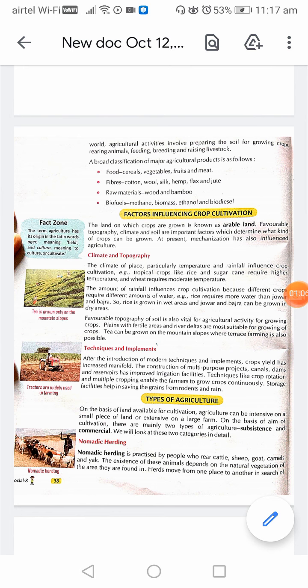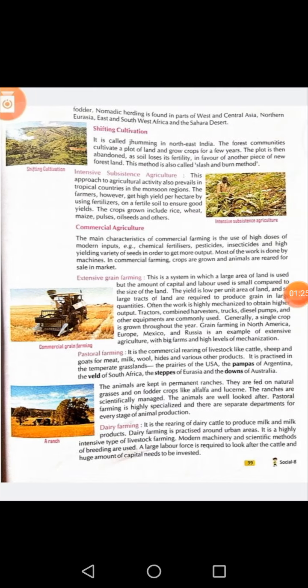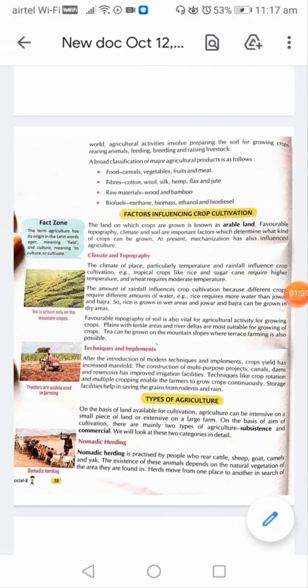First type: nomadic herding. Nomadic herding is practiced by people who rear cattle, sheep, goat, camels and yak. The existence of these animals depends on the natural vegetation of the area they are found in. Herds move from one place to another in search of fodder. Nomadic herding is found in parts of West and Central Asia, Northern Eurasia, East and Southwest Africa and the Sahara Desert.